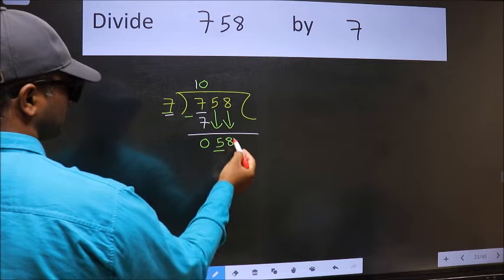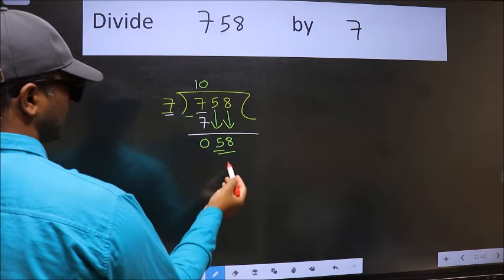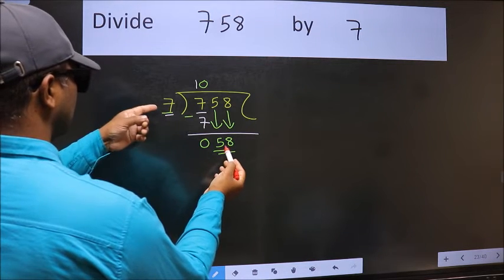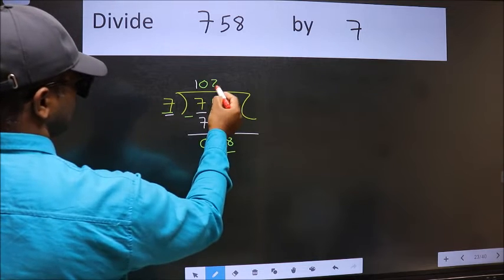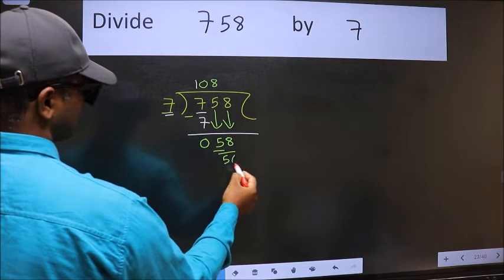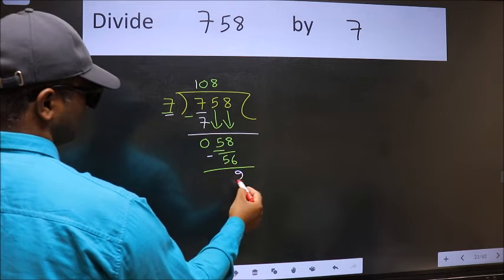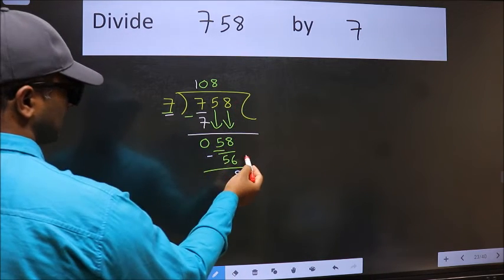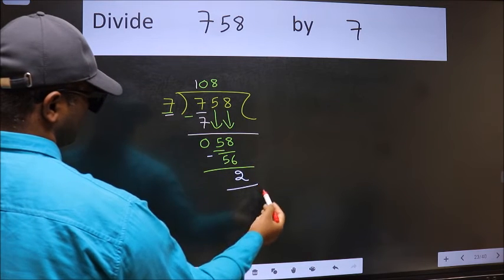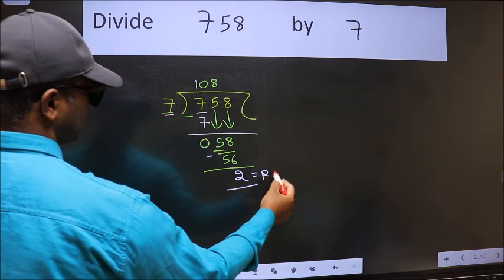Now 58. A number close to 58 in the seven table is 7 eights 56. Now we should subtract, we get 2. No more numbers to bring down, so we stop here. This is our remainder and this is our quotient.